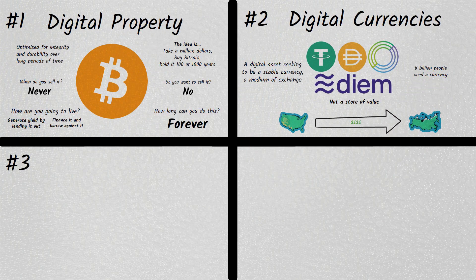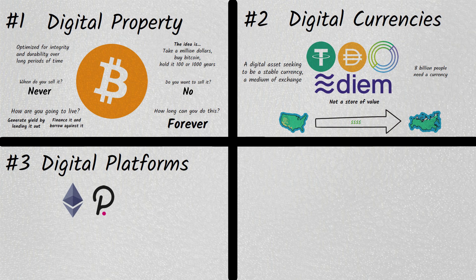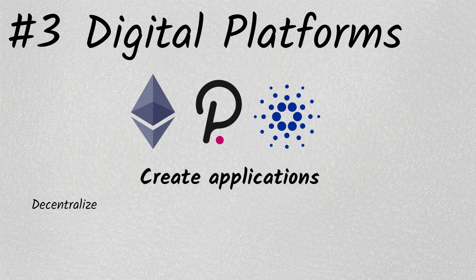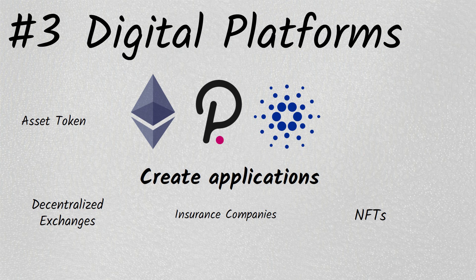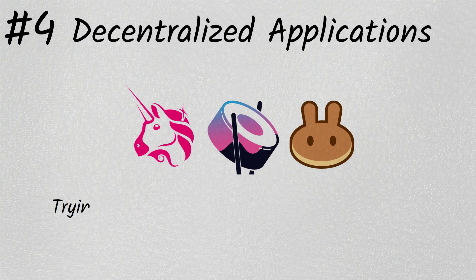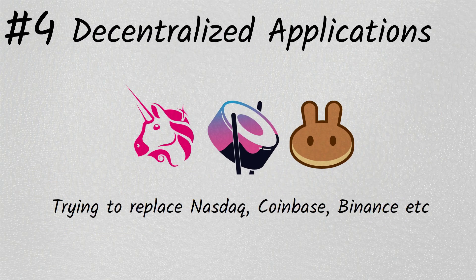The third quadrant is a digital platform — Ethereum. It's a platform where you can create applications like a decentralized exchange, an insurance company, NFTs. When you buy ETH, you're buying an asset token, a digital asset that gives you a share in that digital platform. The fourth quadrant is decentralized applications — Uniswap, for example — trying to replace NASDAQ, Coinbase, or Binance Smart Chain replacing Binance, a centralized exchange.